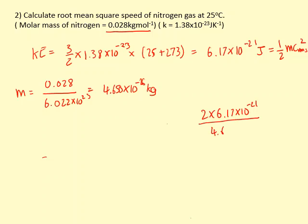4.65 times 10 to the minus 26. That's crms squared, so do the square root. That gives me crms is equal to 515 meters per second.